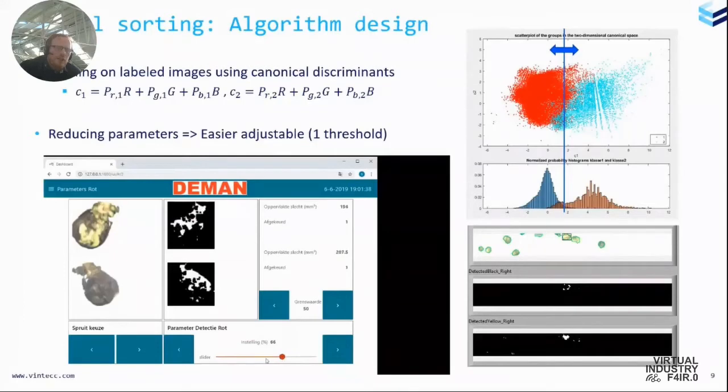In the movie, you see that the operator can play with that. So not all variants of sprouts are the same. So we have a little bit of changes in colors, a little bit also perception from the customer or the operator that uses this. And therefore, he can easily adjust his machine. So the white parts are in fact the parts that are detected as bad. If we go above a certain threshold of bad, then the sprouts are detected as bad sprouts.